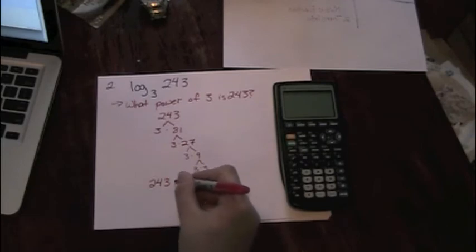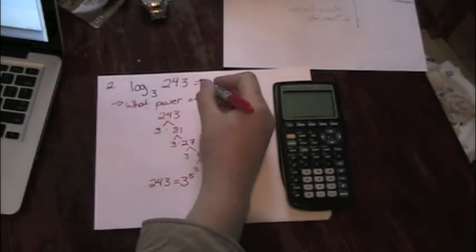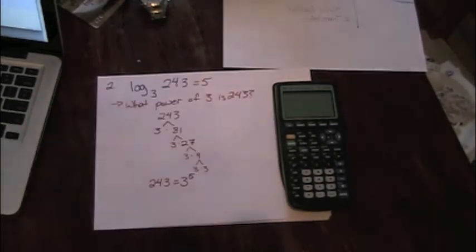243 equals 3 to the fifth power. So what power of 3 is 243? It's 5.